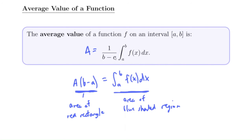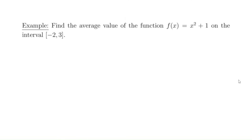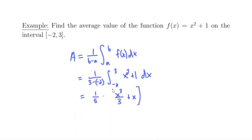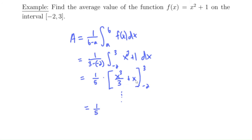To compute the average value, we do the definite integral and divide by (b minus a). So: 1 over (3 minus negative 2), which is 1/5, times the integral from minus 2 to 3 of x²+1 dx. We already found this integral equals 50/3. So the average value is 1/5 times 50/3. Since 50 divided by 5 is 10, this equals 10/3, or 3.3 repeating.